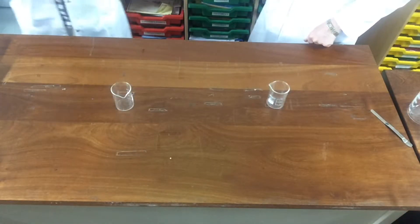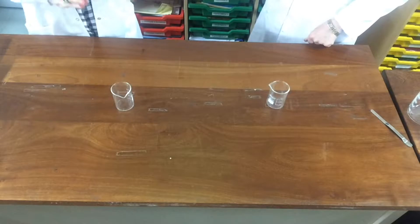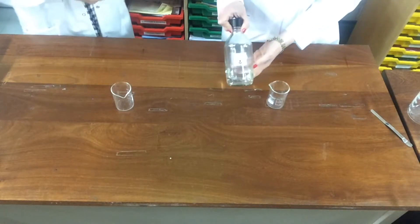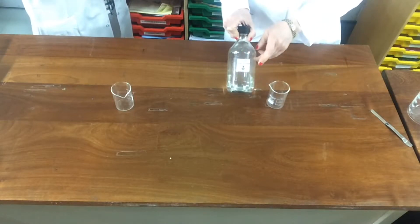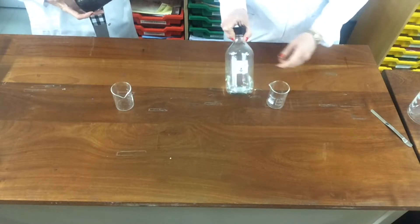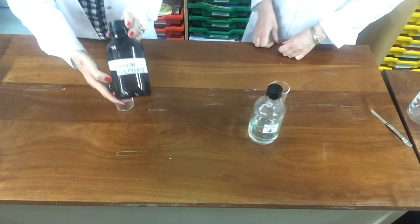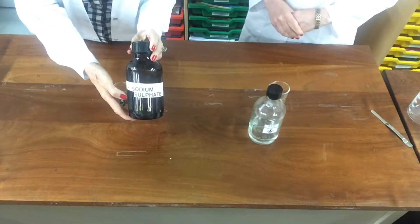What we have to do Dr. Born is we have to have two solutions. The first one is lead nitrate and we know that's a soluble salt because of the nitrate and all nitrates are soluble. And we're going to be adding it to sodium sulphate.